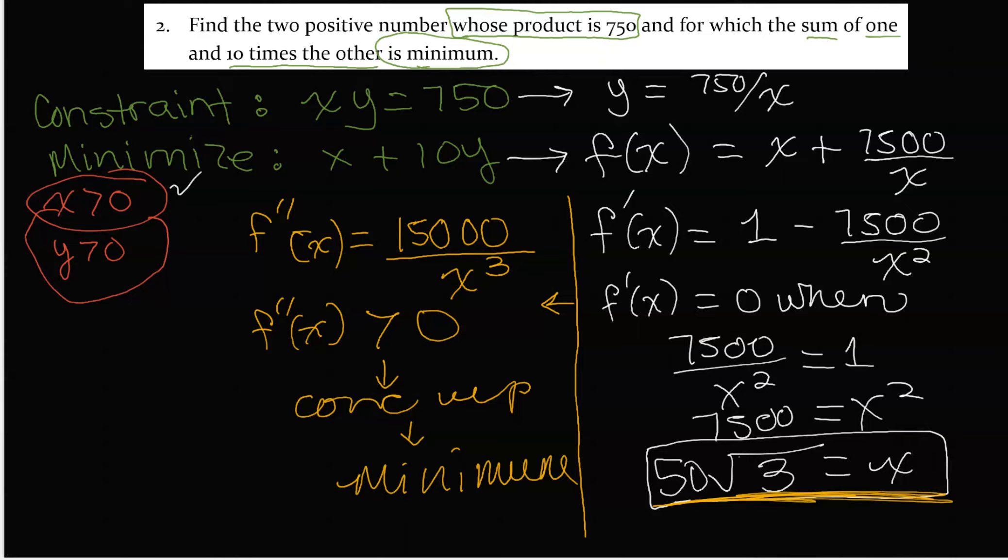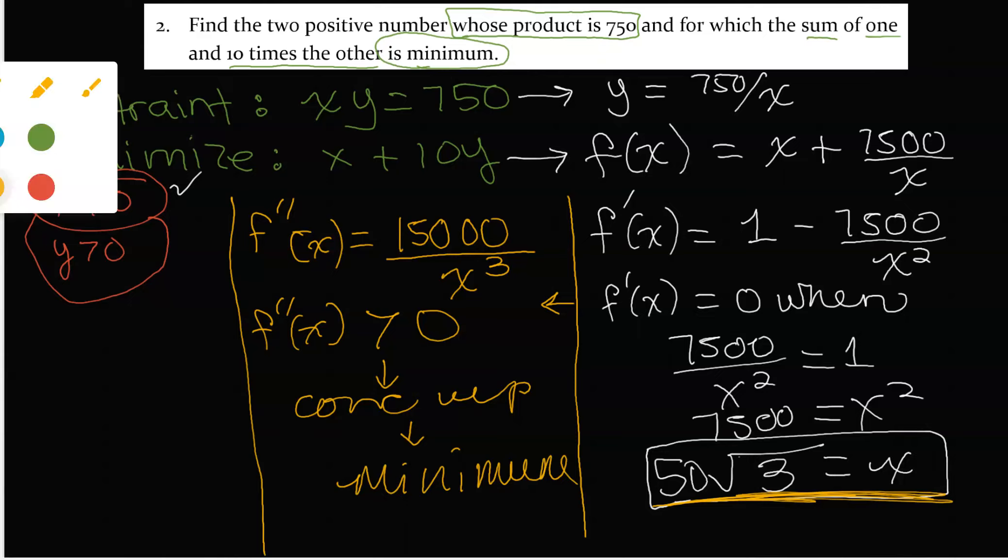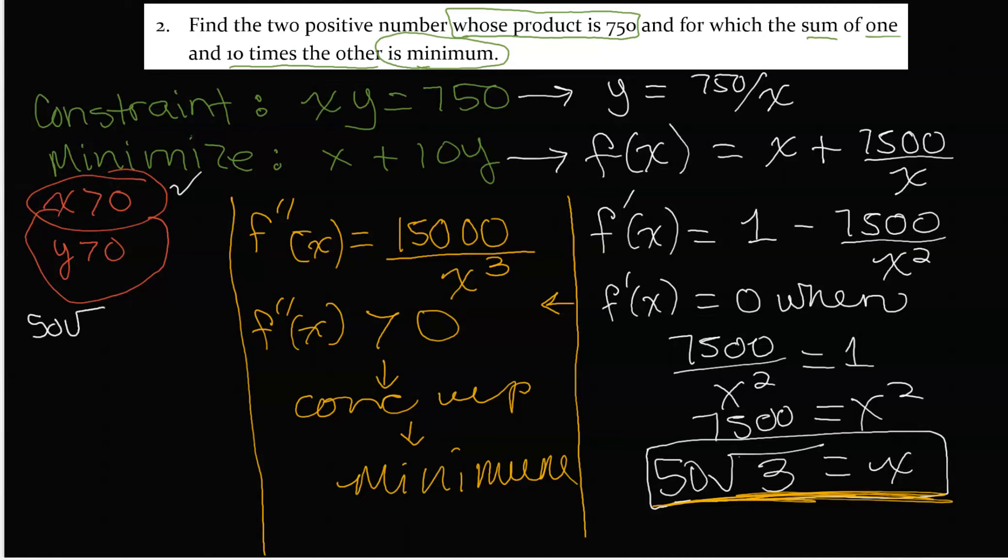That means we have X being 50 square root of 3, so we would say 50 square root of 3 times Y equals 750. So Y equals 750 divided by 50 square root of 3. 750 divided by 50 is 15, so Y is 15 over square root of 3. Rationalizing, we would have 15 square root of 3 over 3, which reduces to 5 square root of 3.